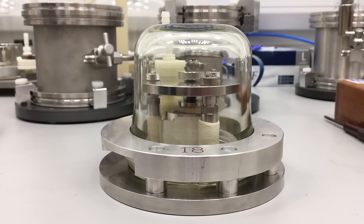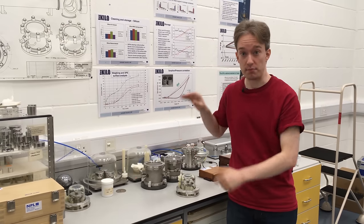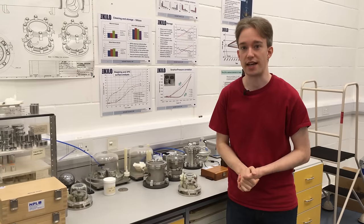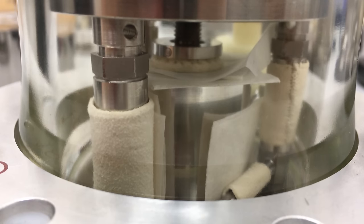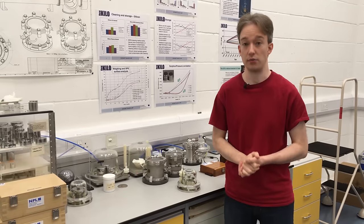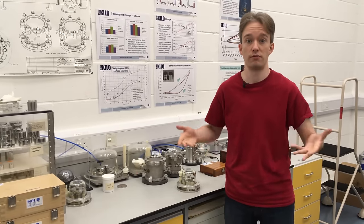This is the kilogram. Not a kilogram, the kilogram, the British National Standard Kilogram at the National Physical Laboratory in Teddington. It's a lump of platinum iridium alloy, it's kept in a very secure safe just under here, and it weighs, well, one kilogram.